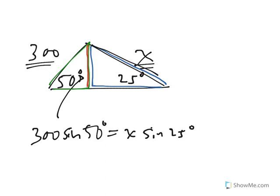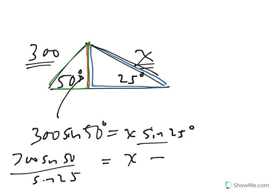And then when I solve for x by dividing both sides by sine 25, I get 300 sine 50 over sine 25, which turns out when you plug it into the calculator to be 544.